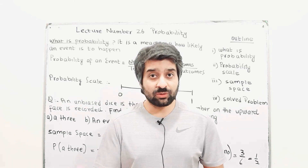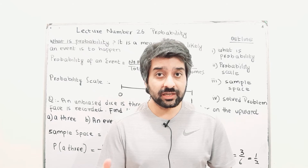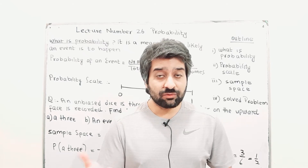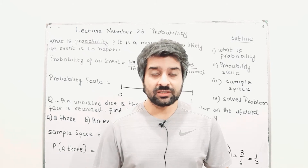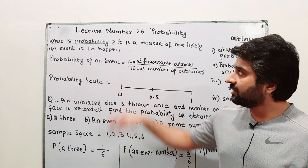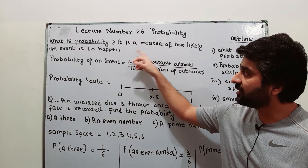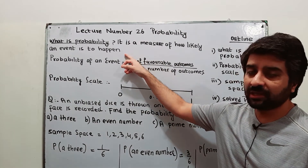Probability is expected in fraction or in decimal. Probability is basically a measure of how likely an event is to happen.